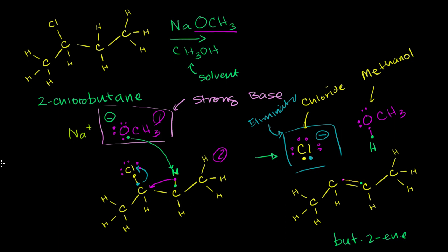In the video on E2 reactions, I showed you how a strong base — and all of this happens simultaneously — can nab a hydrogen off of this carbon right here. It's just nabbing the proton itself; it's not grabbing the hydrogen and the electron. That electron goes to this carbon, which allows that carbon to give away the electron that was forming a bond with the chlorine to go with the chlorine. This all happened at once — the chloride got eliminated.